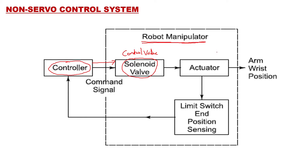The robot manipulator has an arm and wrist position. The direction of movement and how much angle the arm moves is decided by the controller, which then activates the control valve. The control valve activates the actuator, and the actuator starts the arm movement. So the arm begins moving.